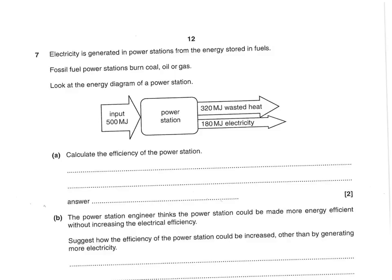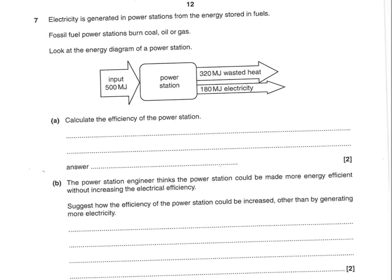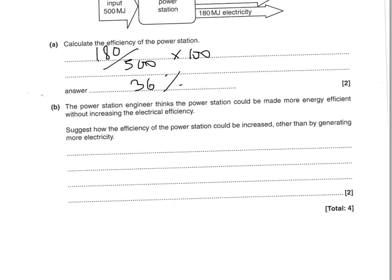Electricity is generated in power stations from energy stored in fuels. Fossil fuel power stations burn coal, oil, or gas. Look at the energy diagram of the power station and calculate its efficiency. Electricity is the useful energy. The input is 500 and the useful output is 180, so it's 180 divided by 500 times 100, giving 36%. If you wrote 0.36 without multiplying by 100, that's also fine. The power station engineer thinks it could be made more energy efficient without increasing electrical efficiency — suggest how. Two marks: you can recycle the waste heat or energy for one mark, but if you say how it can be recycled — for example, using the waste heat to warm homes, buildings, or to heat the power station — that gets you the second mark as well.